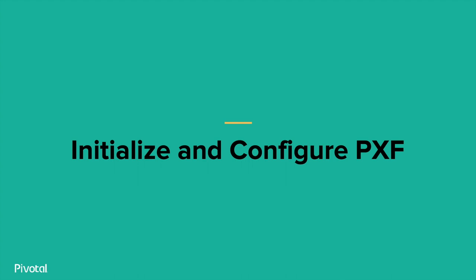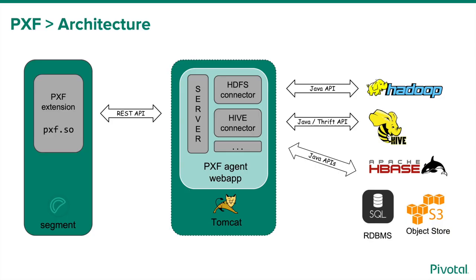Let's have a look at the steps to initialize and configure PXF. The PXF architecture consists of two parts: the PXF extension and the PXF agent that communicate via REST APIs. The extension is written in C and is part of the segment process loaded as a shared library. The agent is a Java web application deployed in Apache Tomcat. The Greenplum database administrator will configure at least one server definition for each external data store and publish the available server names as appropriate.